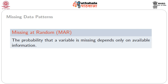Then comes MAR, or Missing At Random. Here the probability that a variable is missing depends only on available information. For example, respondents in a business occupation are less likely to report income. Whether income is reported or not is conditional on the occupation of the individual — if the individual is a businessman there is a higher chance that income is not reported. So this is missing at random, but the randomness is conditional on occupation, or it depends on the available information of occupation.